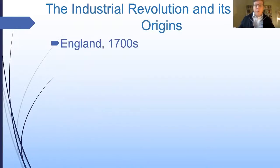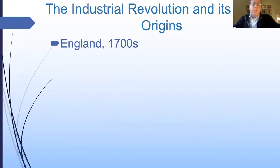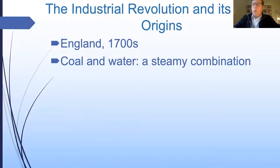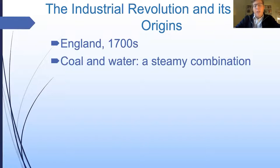So let's start at the beginning. The Industrial Revolution began in England in the 1700s, and it began because England was abundant in two very important materials: coal and water — what I like to call a steamy combination. And we'll talk about why I call it that in just a second.